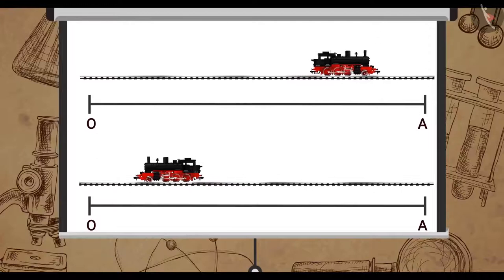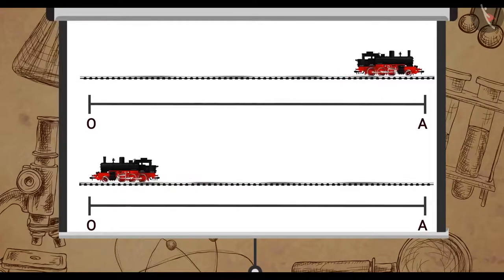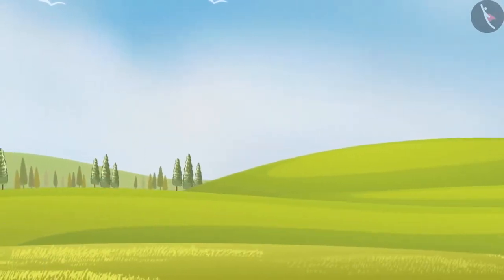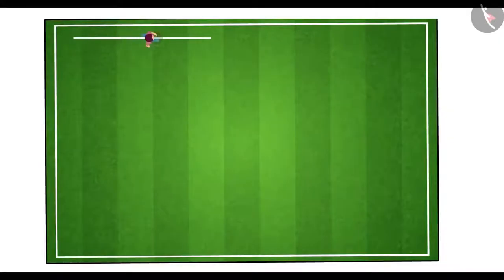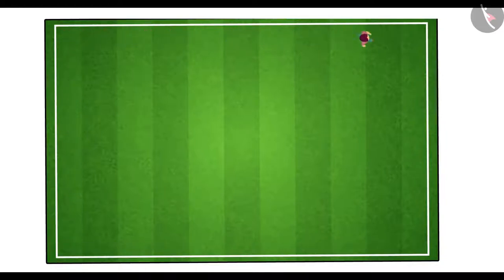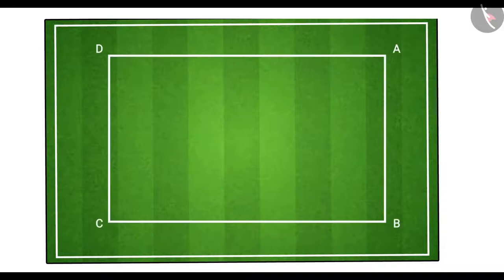Now let's take an example to understand it better. Have you ever run on a closed path like around a playground? Let us consider the motion of an athlete on a closed path as our example. Look at this diagram of a rectangular field ABCD.